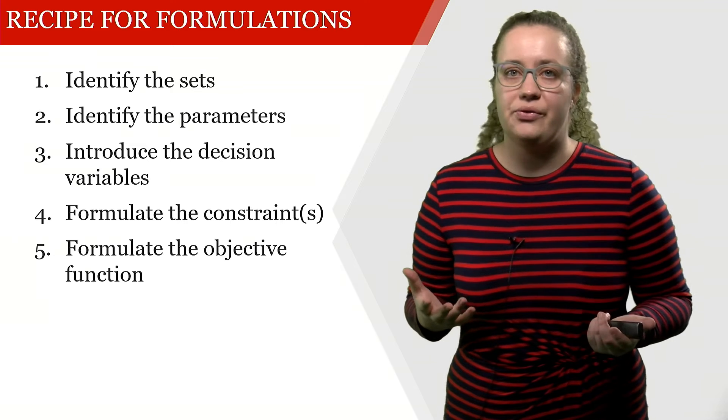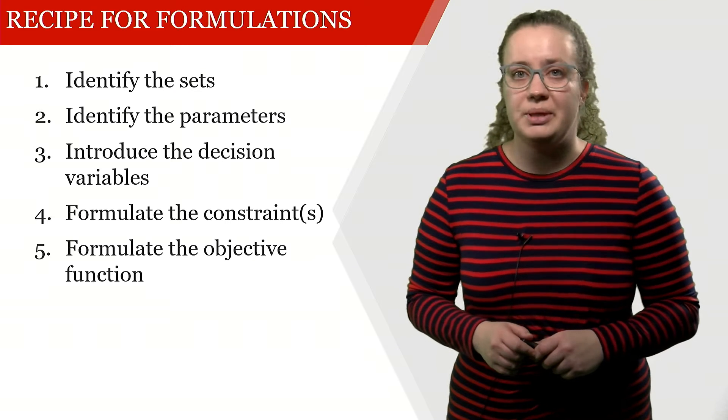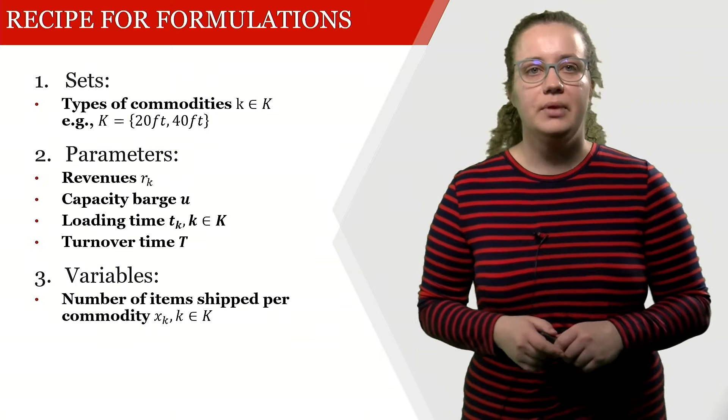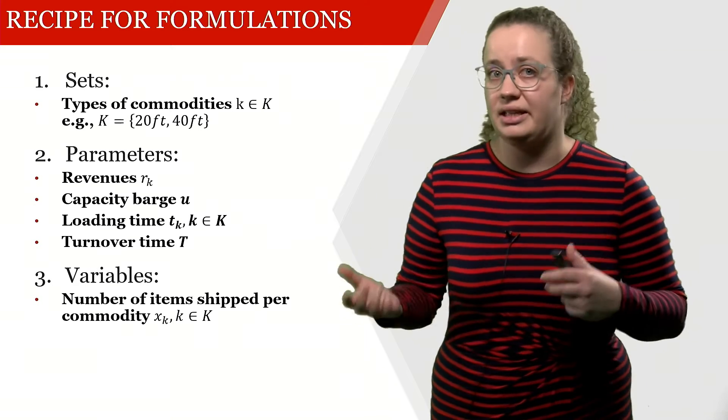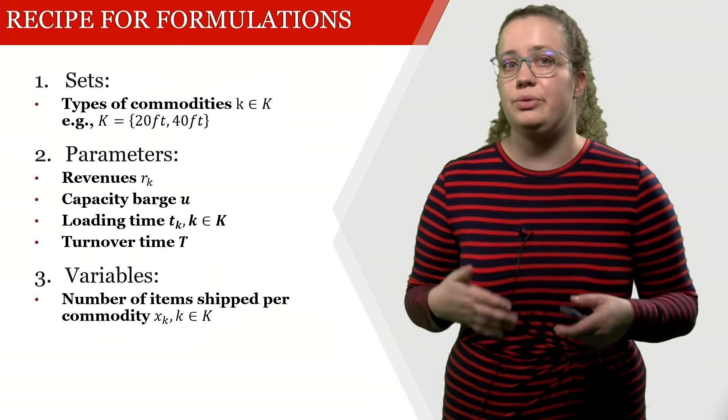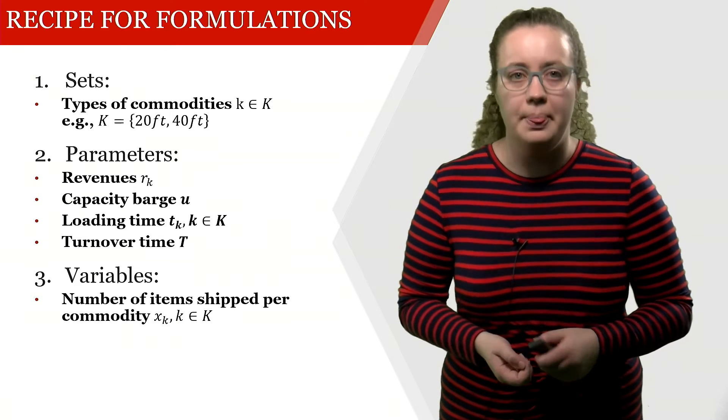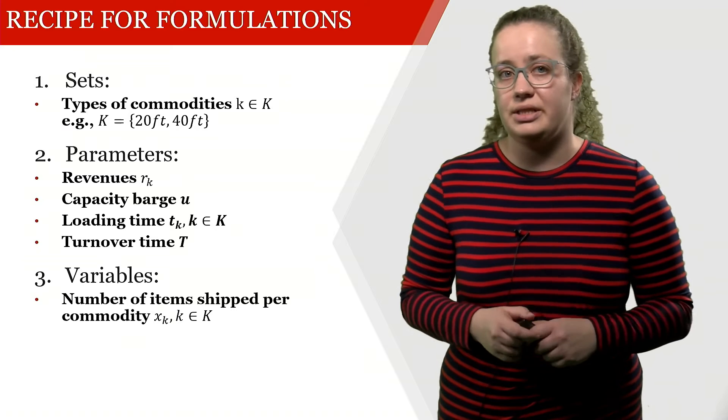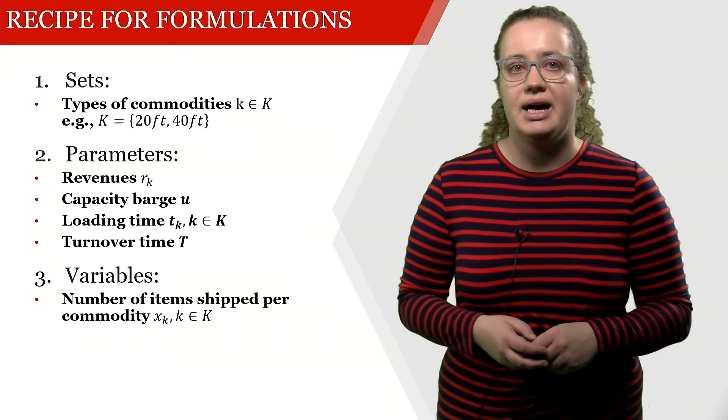Since we don't want to reinvent the wheel, we're going to use the formulation for the mixed integer linear program that we've seen before. This has K ∈ K as the type of commodities, which is a set. We have revenues, barge capacity, loading time and turnover time as parameters. And we have the number of items shipped per commodity as a variable.